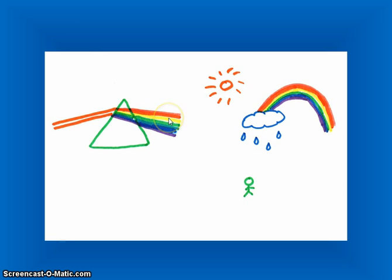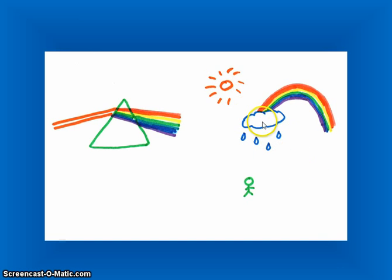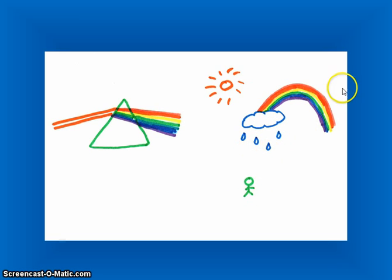This allows us to separate out the different colors of light within white light. White light is a combination of all colors of light combined together. When sunlight comes out after it rains, that light interacts with water droplets in the air, which refracts the light and bends it — with red bending the least, then orange, yellow, green, blue, and violet bending the most — which separates them out and allows us to see a rainbow.